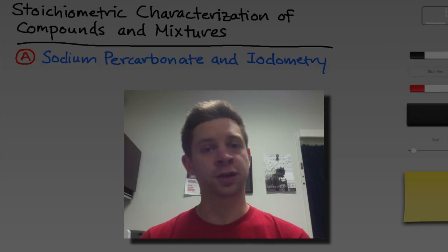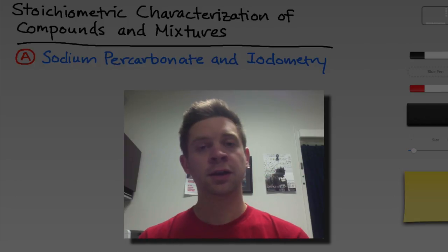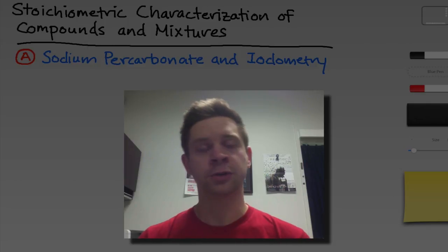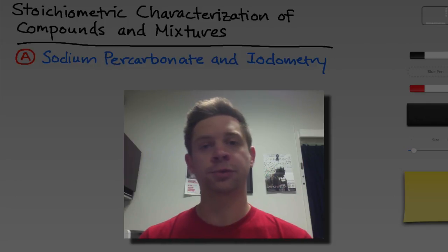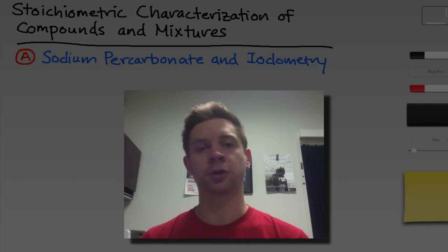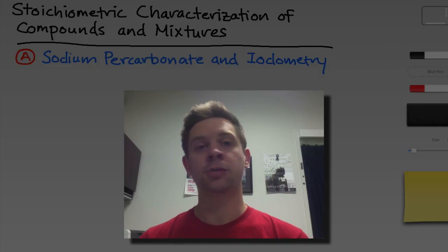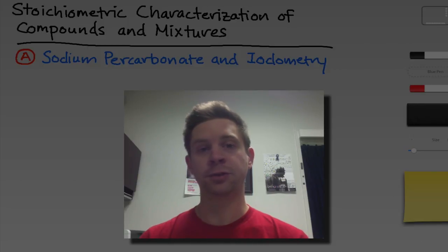In Part A, we'll focus on a compound made of sodium carbonate and hydrogen peroxide, and specifically we're going to determine the molar ratio of hydrogen peroxide to sodium carbonate within that compound. In Part B, we look at a mixture of sodium bicarbonate and carbonate, and our goal there is to determine the mass percent of sodium bicarbonate in the mixture.